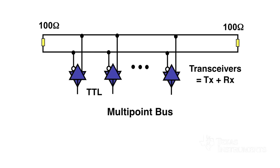Because MLVDS can be used in topologies with multiple drivers and receivers dispersed over a bus, there must be two terminations — one at both extremities of the bus. You do not need to place the resistors close to the MLVDS receivers. A value of 100 ohms for each termination is still used.